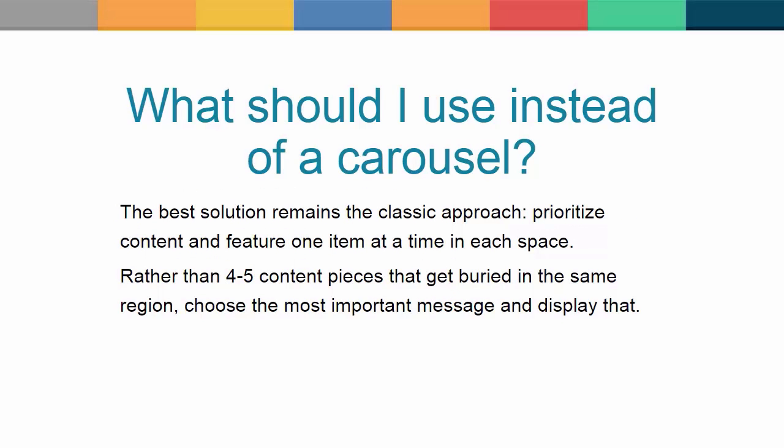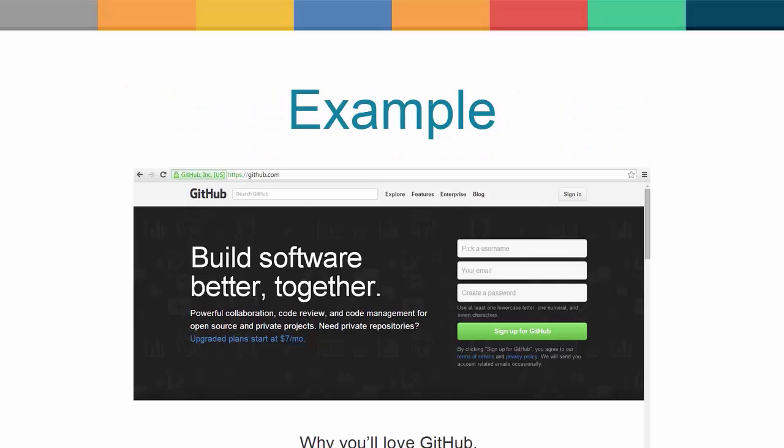So, what should I use instead of a carousel? The best solution remains the classic approach: prioritize content and feature one item at a time in each space. Rather than four or five content pieces that get buried in the same region, choose the most important message and display that, changing your featured items often. In this context, there is a case worth a mention, and that is the GitHub homepage.